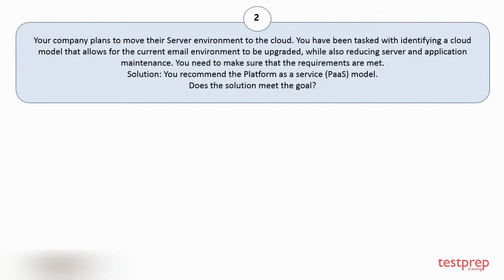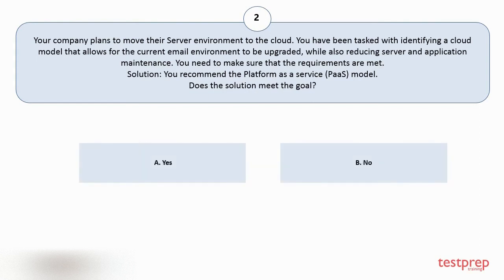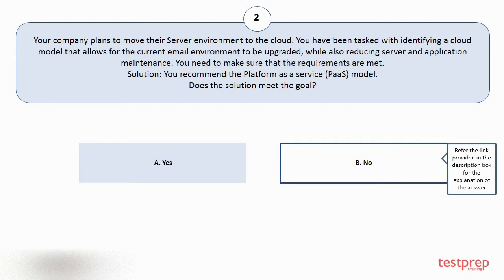Question number two. Your company plans to move their server environment to the cloud. You have been tasked with identifying a cloud model that allows for the current email environment to be upgraded while also reducing server and application maintenance. You need to make sure that the requirements are met. Solution: you recommend the platform as a service model. Does the solution meet the goal? The correct answer is option B.